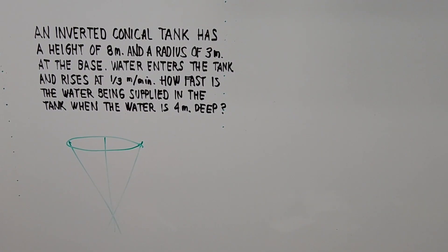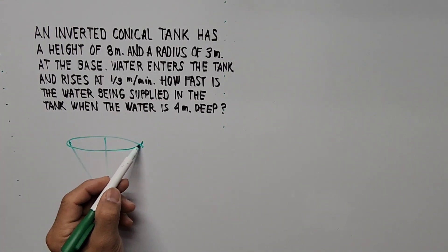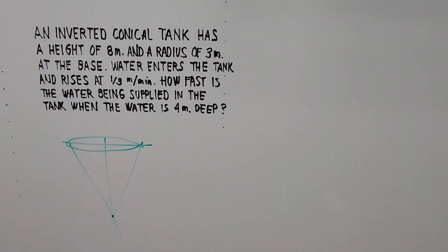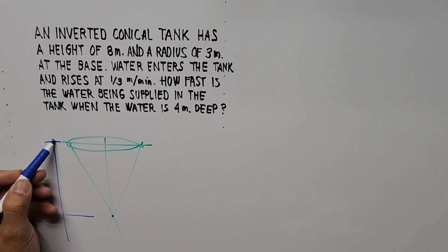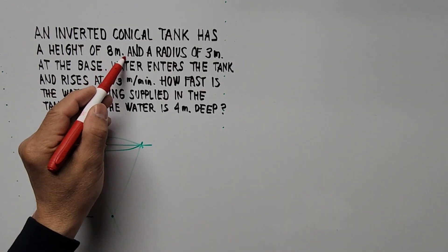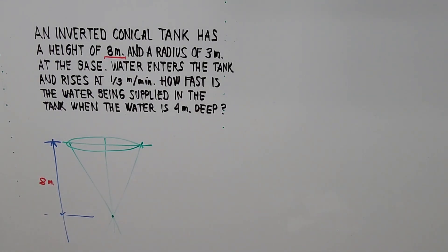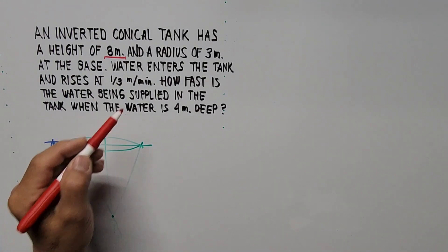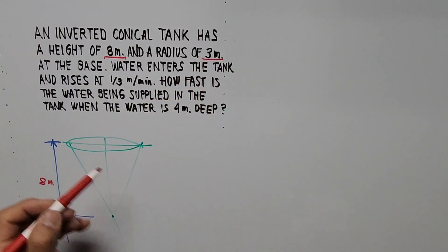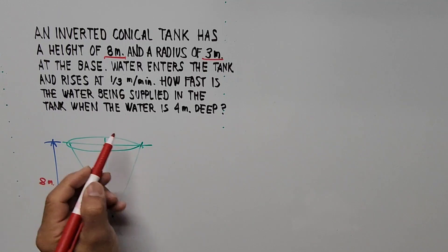So this is a sketch of the inverted conical tank. Here is the base at the top, and here is the height — that is 8 meters. And the radius of the base is 3 meters. Since this is inverted, the base is on top, so this is 3 meters.